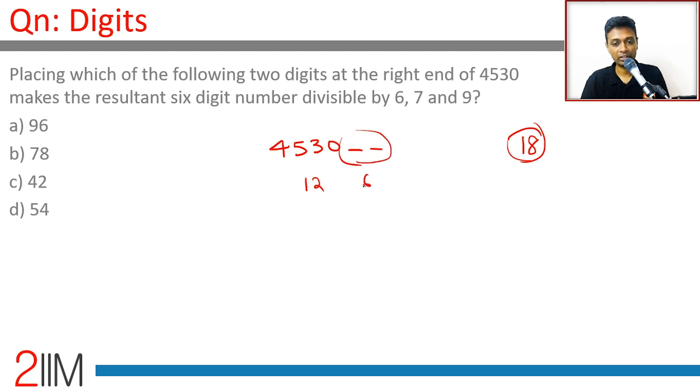So these two should add up to either 6 or 15. 12 plus 6 is 18, 12 plus 15 is 27. So sum of the digits should be either 6 or 15. 9 and 6 works, 7 and 8 works, 4 and 2 works, 54 does not work.